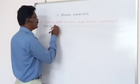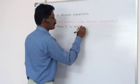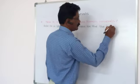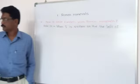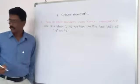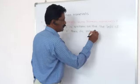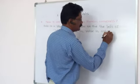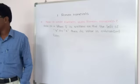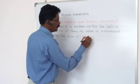What is Rule 4? When I is written on the left of V or X, then its value is subtracted from the value of V or X.